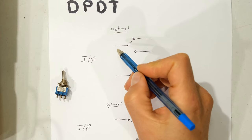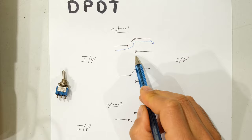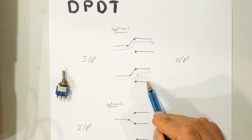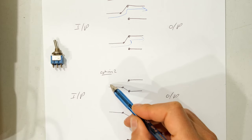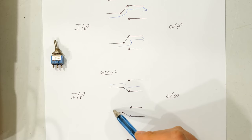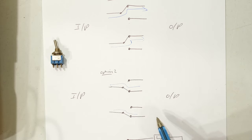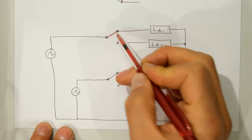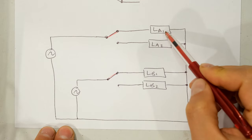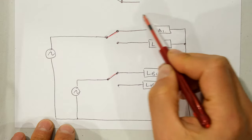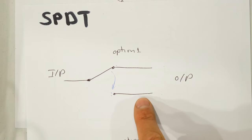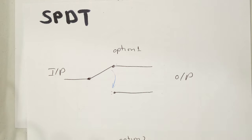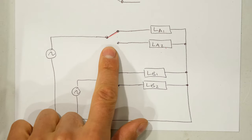When the switch is in one orientation, current will flow through two of the circuits while the other two have no current — we have two independent circuits. Then in the second option when the switch is toggled to the other orientation, the other two circuits become active. So all in all we have four circuits. Looking at the diagram: the link is in one position with load A1 and load A2 on one side of the switch — the same as the single pole double throw layout — but now we're putting two of those into the same switch housing.